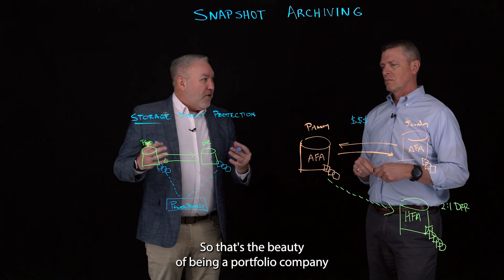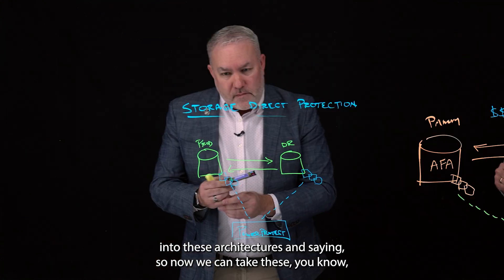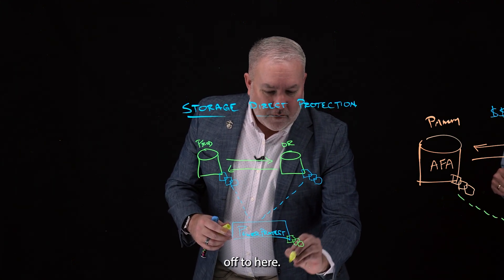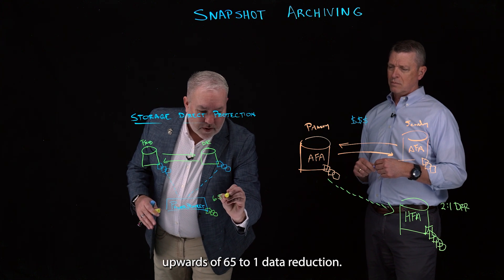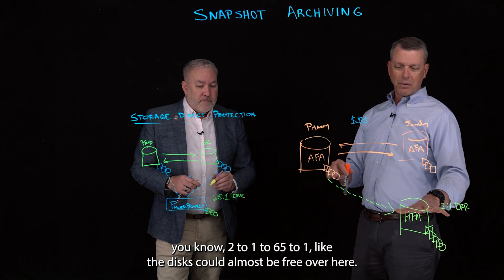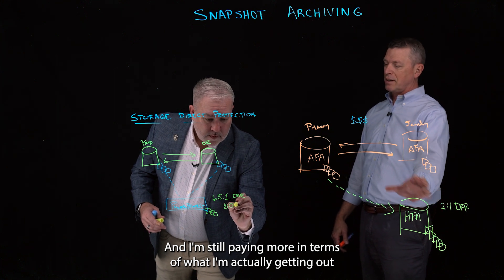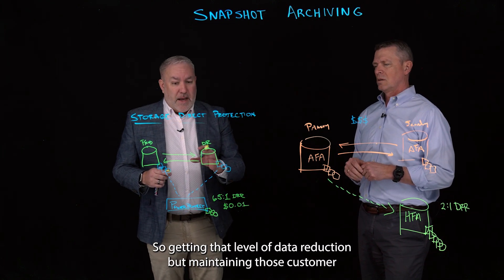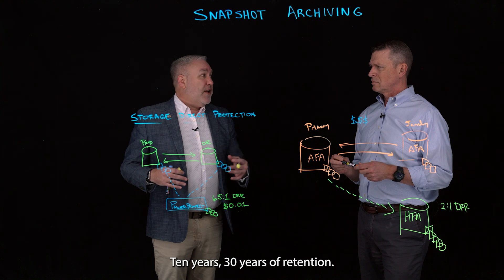That's the beauty of being a portfolio company and bringing best-of-breed engineering into these architectures. Now, we can take primary Site A, Site B, and start archiving those snapshots off. But instead of that two-to-one data reduction, we're talking about seeing upwards of 65-to-one data reduction. That's compelling — two-to-one versus 65-to-one. The disks could almost be free over there and you're still paying more in terms of what you're actually getting out of your archive. So in this scenario, we're talking about pennies on the dollar. Getting that level of data reduction while maintaining customer environments that need seven years, ten years, or 30 years of retention — we can leverage the integration of PowerProtect and PowerStore via Storage Direct.